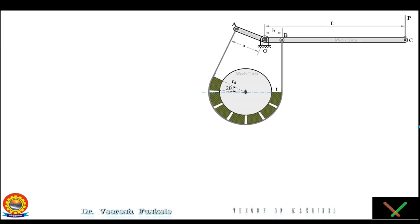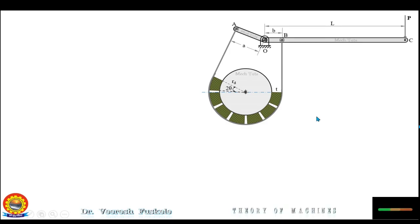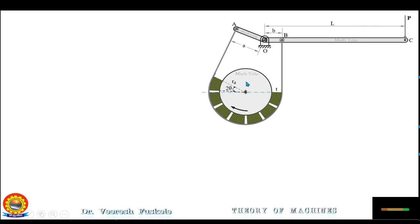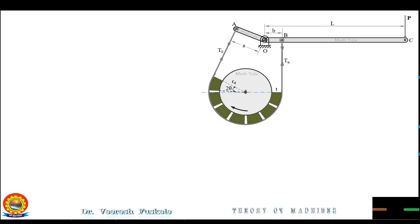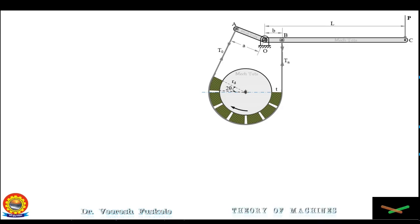Let us now derive the equation of breaking torque, ratio of tensions, and the force applied in the case of band and block brake. Let there be n blocks on the brake, each block subtending an angle of 2θ at the center of the drum. For clockwise rotation of the drum, the end of the band attached to A will be the slack side with tension T0, and the end attached to B will be the tight side with tension Tn. You might wonder why we use T0 and Tn rather than T1 and T2.